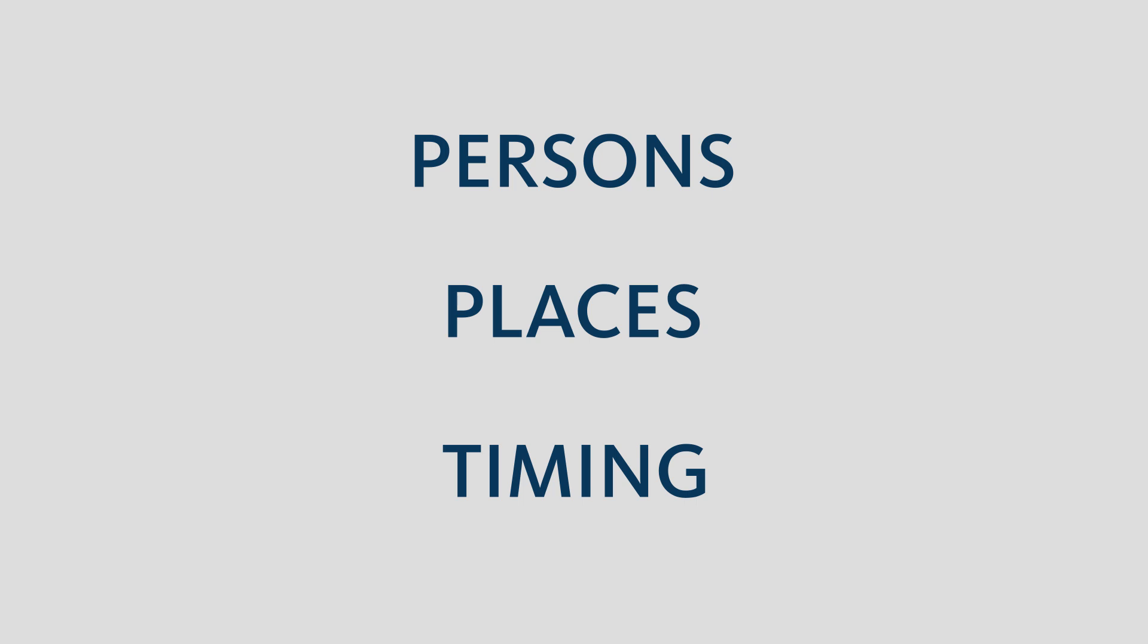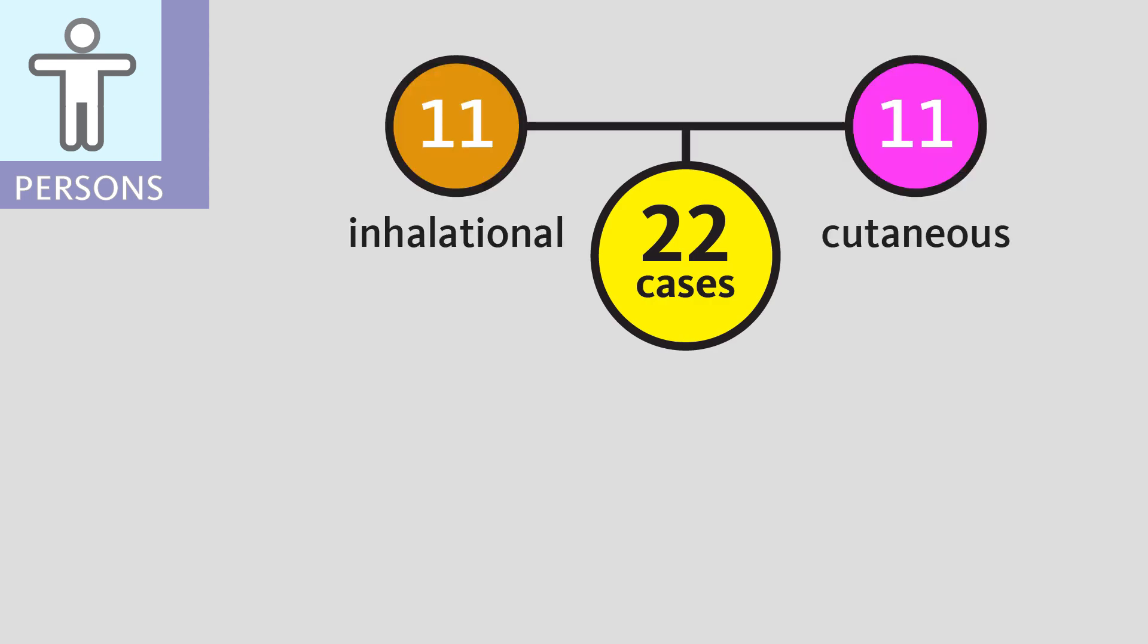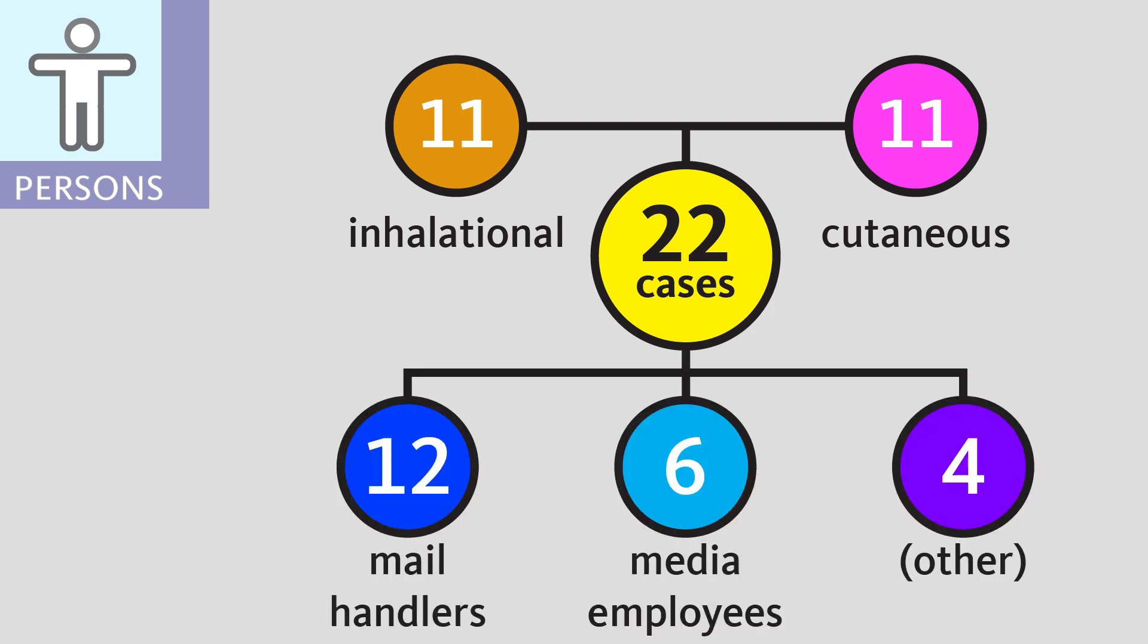First, persons. There were 22 cases of bioterrorism-related anthrax, with 11 confirmed as inhalational anthrax and 11 as cutaneous anthrax. Twelve individuals were mail handlers, six were media employees, and four were placed in the other category, where investigators weren't sure how they were exposed.